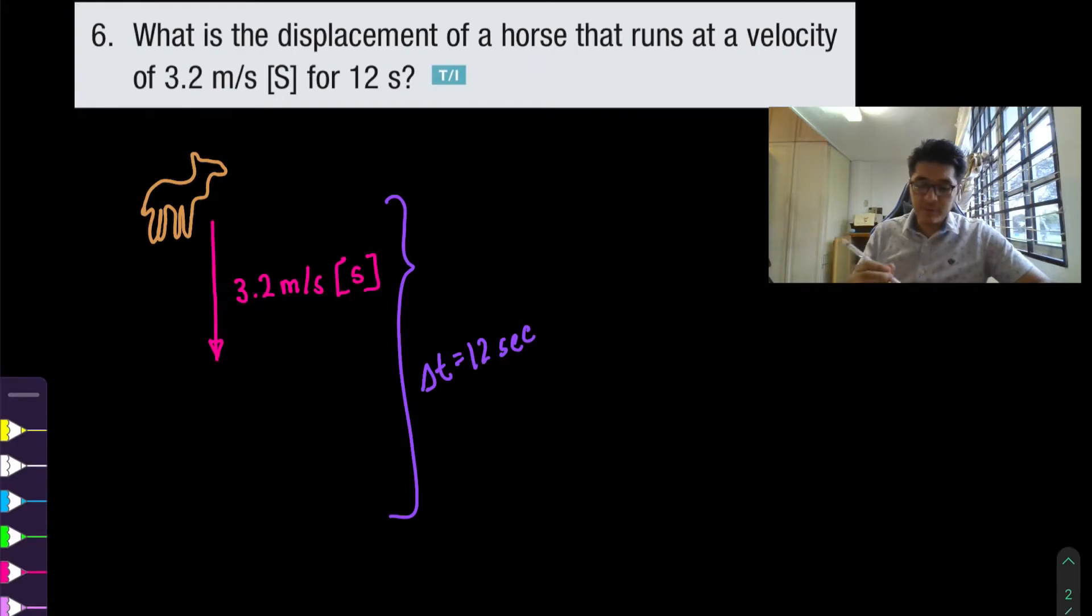Now they're asking us to find the displacement during this time. So since the horse is moving south the displacement should be in the south direction as well so we want to find the displacement vector that's our unknown.